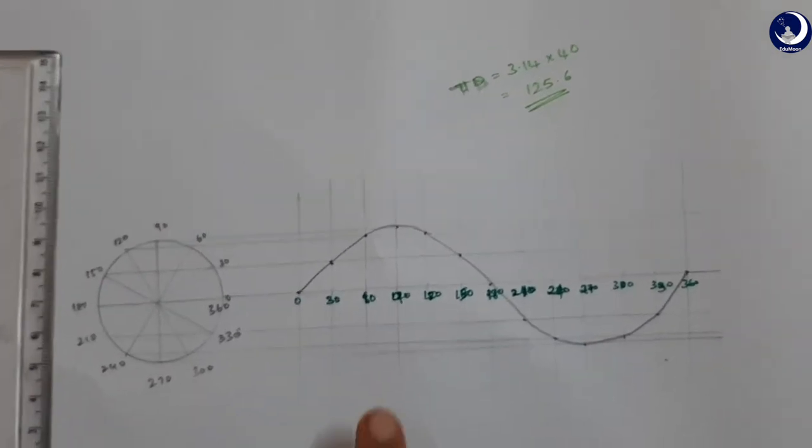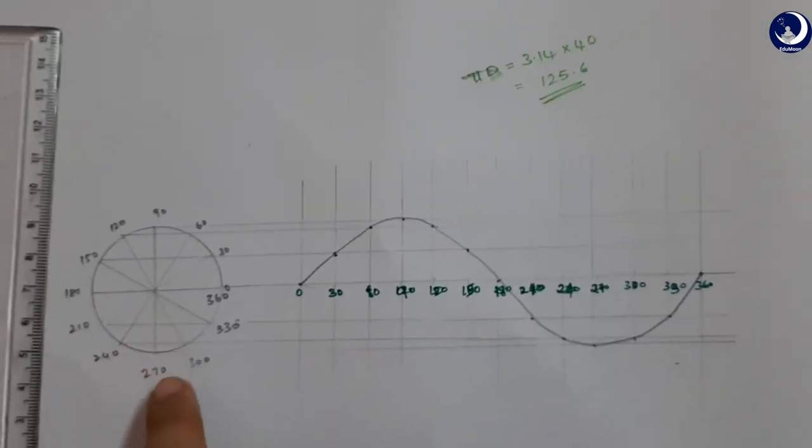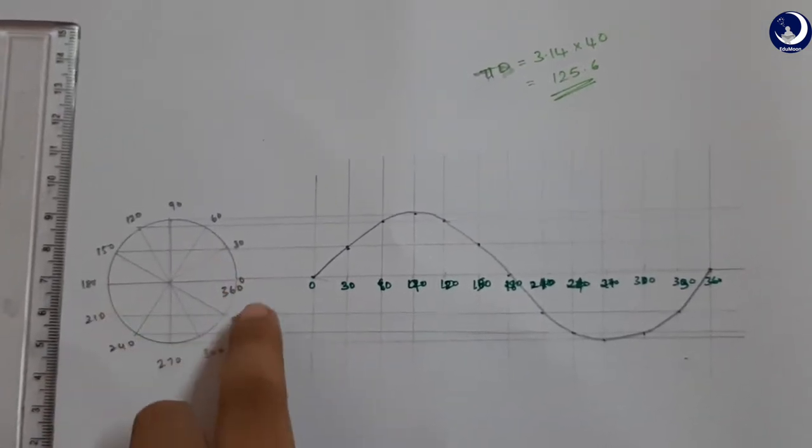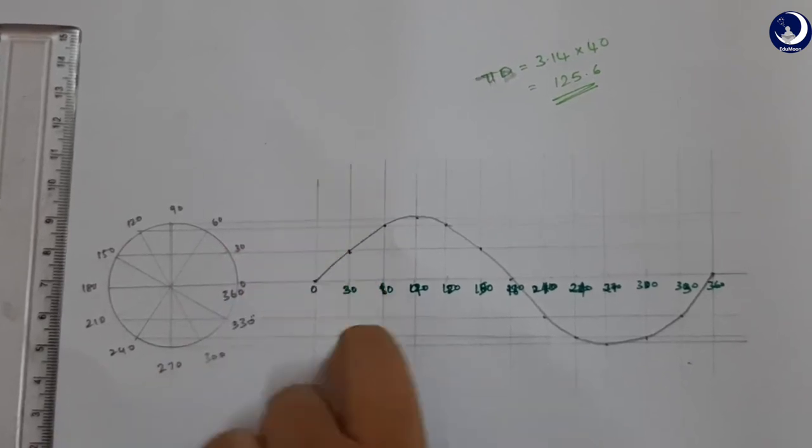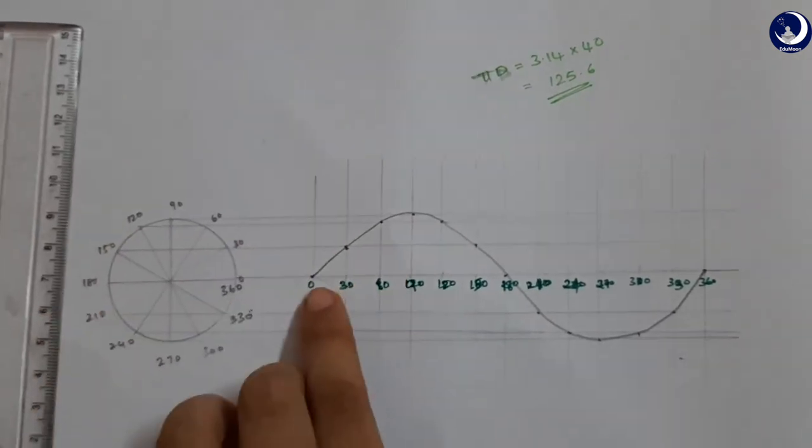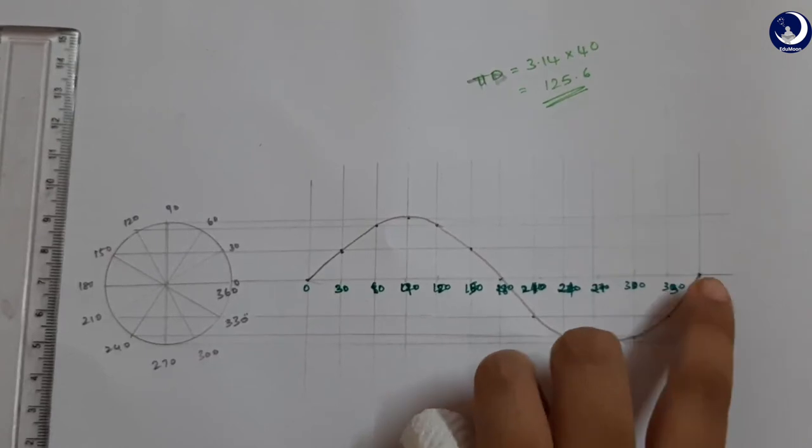Some points to remember: the circle, the markings here, and these lines have to be a little lighter than the sine curve itself. The sine curve has to be drawn with HB.